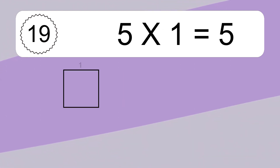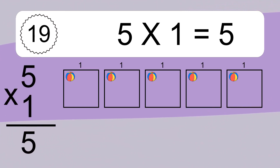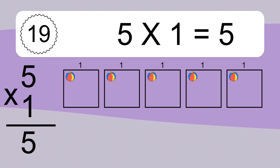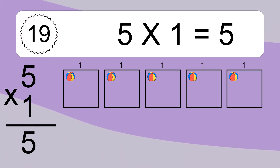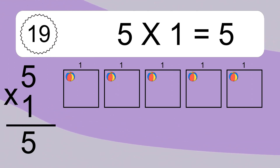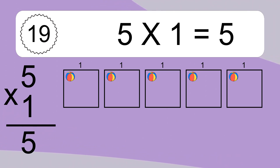5 times 1 equals what? 5 times 1 equals 5. We have 5 boxes, and each box has 1 colorful ball inside. If you count all the balls in all the boxes together, you will have 5 times 1 balls. This equals 5 balls.